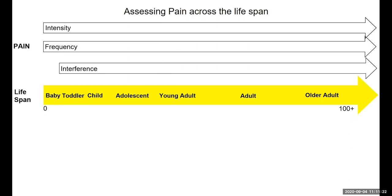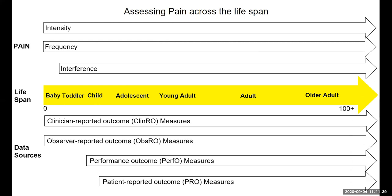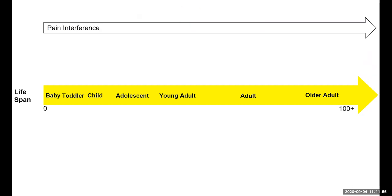Above the lifespan continuum in this framework, I've included several pain constructs such as pain intensity, pain frequency, and how much interference the pain is causing in the person's life. Below the framework are the set of clinical outcome assessments or tools we use to assess pain. This lifespan framework is a nice way to think about both the construct we're measuring and the way we measure it across a person's lifetime. Let's take the construct of pain interference as an example.